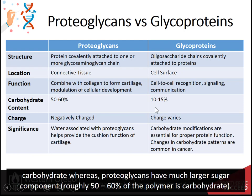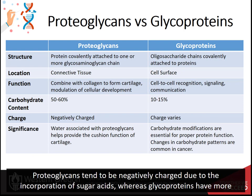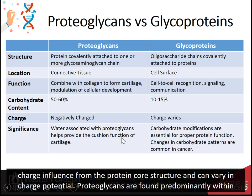Whereas proteoglycans have a much larger sugar component — roughly 50-60% of the polymer is carbohydrate. Proteoglycans tend to be negatively charged due to the incorporation of sugar acids. Whereas glycoproteins have more charge influence from the protein core structure and can vary in charge potential.